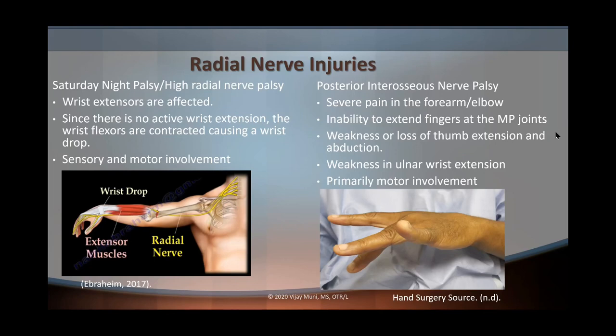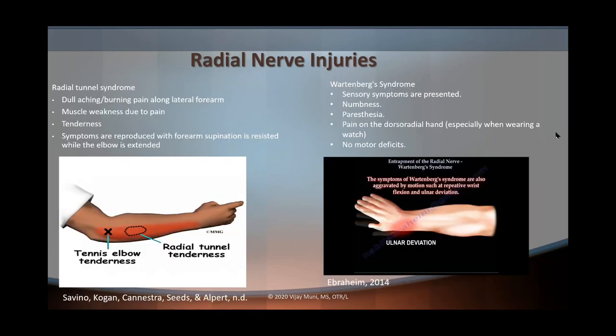With posterior interosseous nerve palsy, just remember that it's a motor involvement — there is no sensory involvement. There's severe pain in the forearm and elbow. The person may have the inability to extend fingers at the MP joint, weakness or loss of thumb extension and abduction, and weakness in ulnar wrist extension. With radial tunnel syndrome, there's dull aching burning pain around the lateral forearm, muscle weakness due to pain, and reports of tenderness in the lateral forearm.